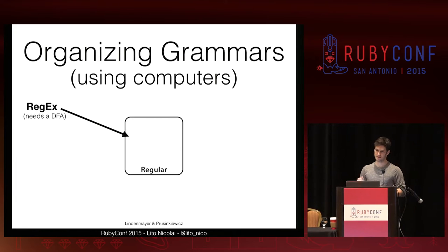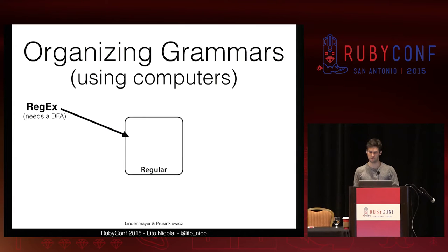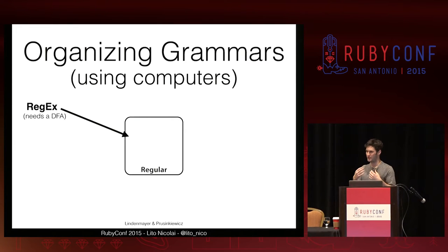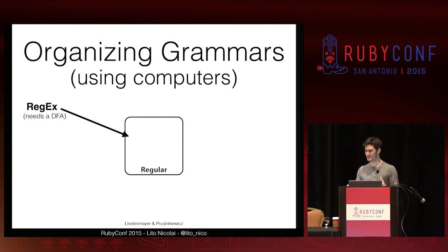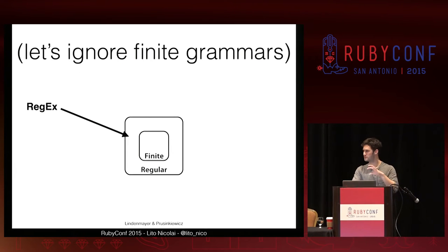This little box indicates all of the strings that can be matched with regular expressions, all of the grammars you can make. But we know from experience that there are grammars outside of those. Like if you, as I totally naively tried, to parse HTML with a regular expression, it doesn't happen. Because there are structures that exist outside this small area. There are also finite grammars, which are a subset of regular grammars — we're going to ignore them.